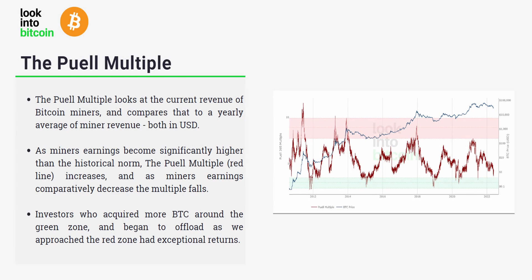In summary, the Puell Multiple looks at the current revenue of Bitcoin miners and compares that to a yearly average of miner revenue denominated in US dollars, as opposed to in BTC. As miners' earnings become significantly higher than the historical norm, the multiple increases, and as miners' earnings comparatively decrease, the multiple falls.